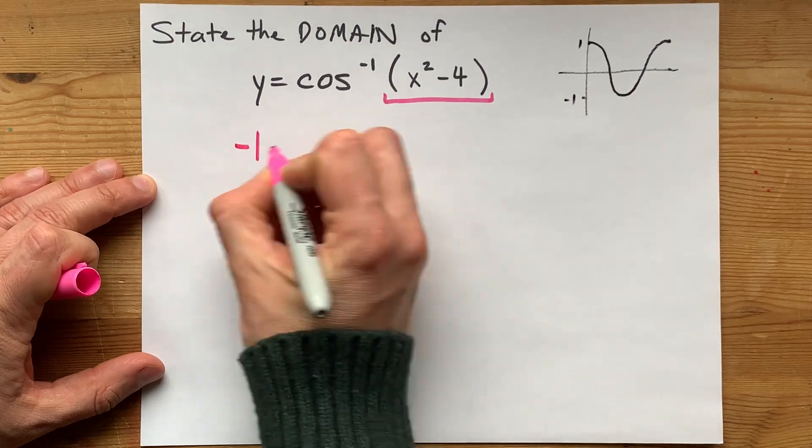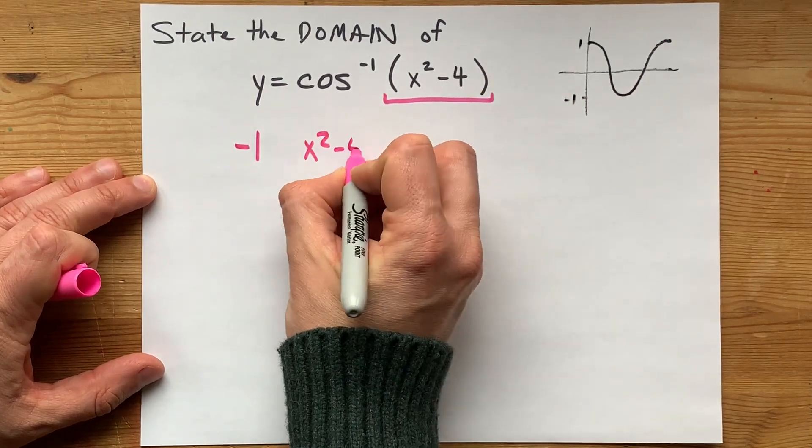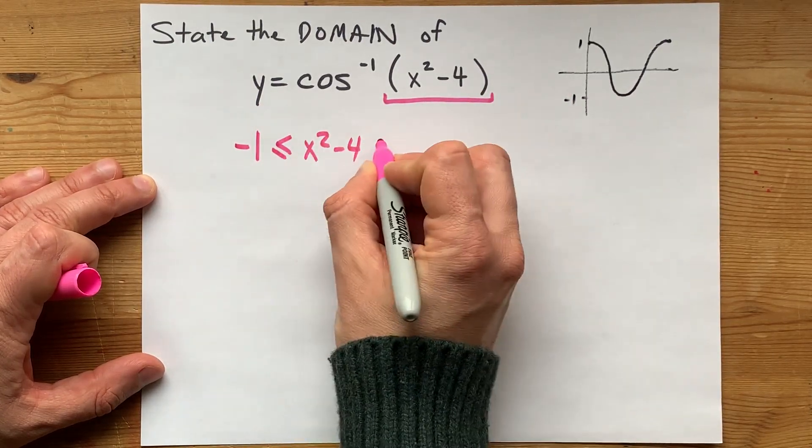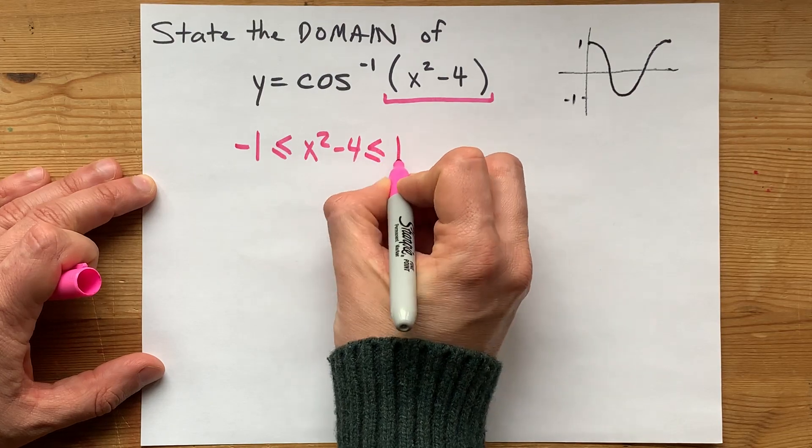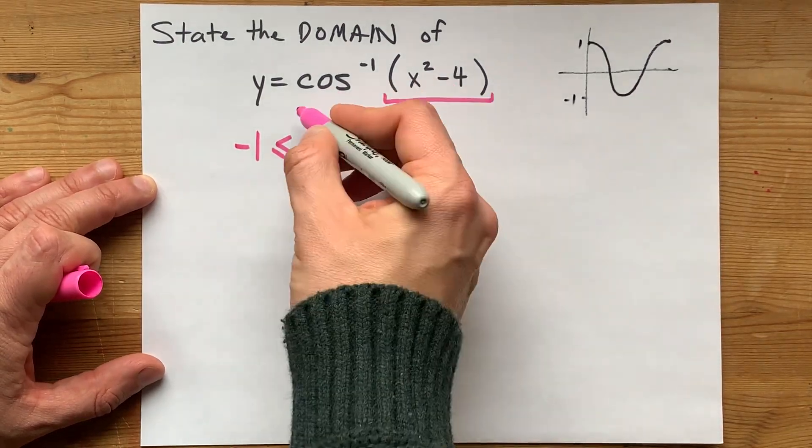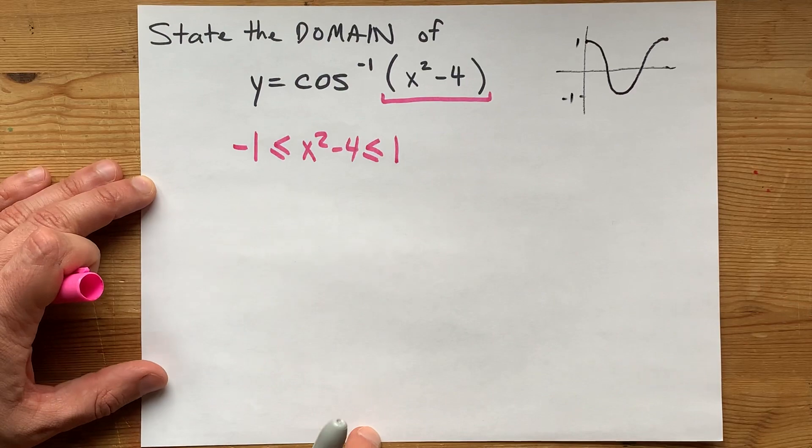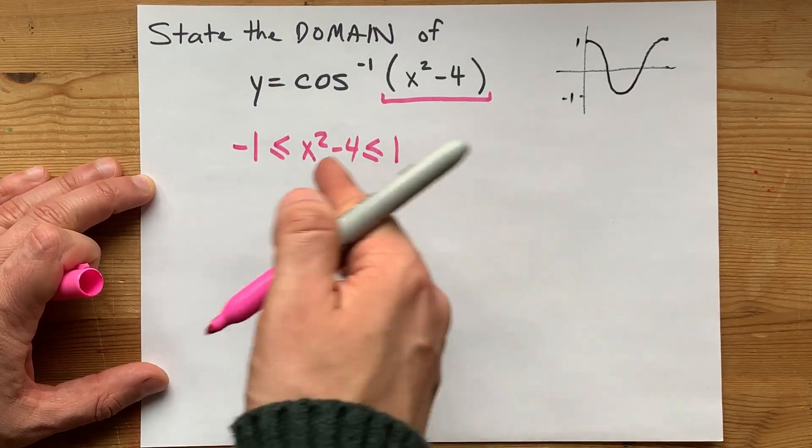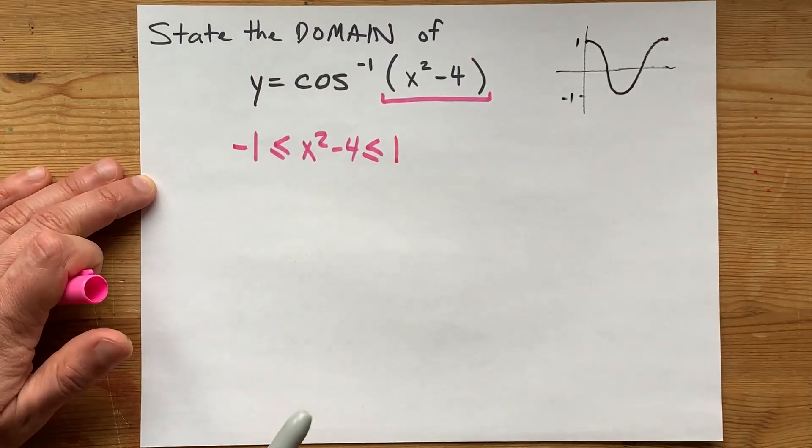What I mean is that x squared minus 4 has to be between minus 1 and 1 in order for you to be allowed to take the cos inverse of it. So it's this inequality that we're solving to get the domain of that function.